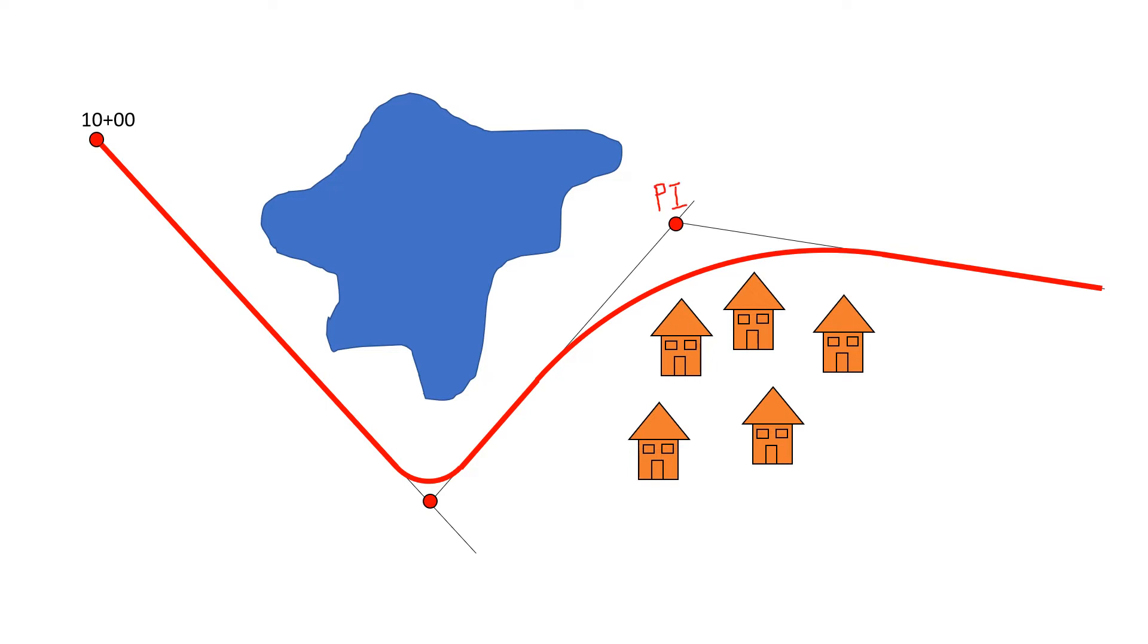We're going to calculate the value T, which is the tangent length between the PC and the PI, and it's also the distance between the PT and the PI. So geometrically, the distance you're going to calculate as T is between these two points: both the PI and PC, and the PI and PT.